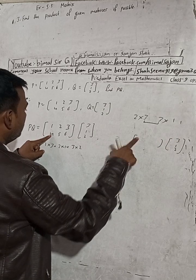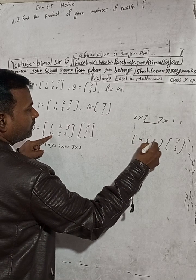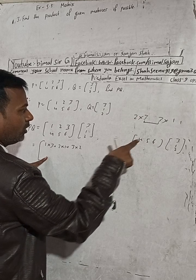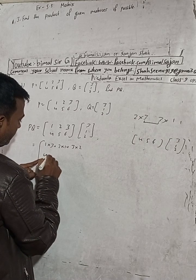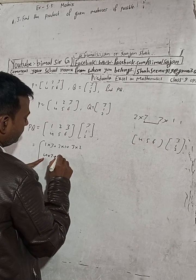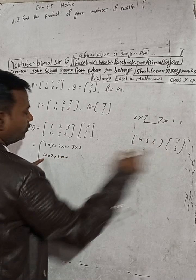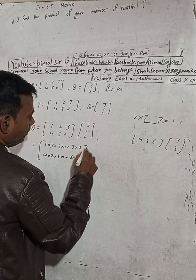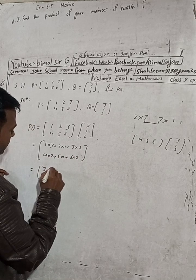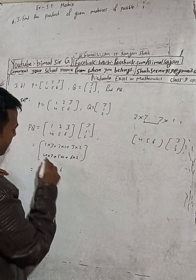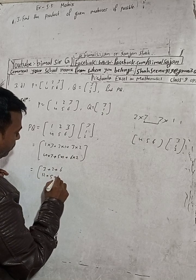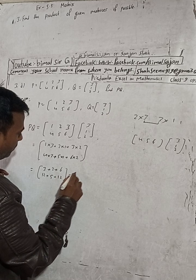For the second row, we use P's second row: 4, 5, 6. So: four into three, plus five into one, plus six into two. Computing: three plus two plus six gives eleven, and twelve plus five plus twelve gives twenty-nine.